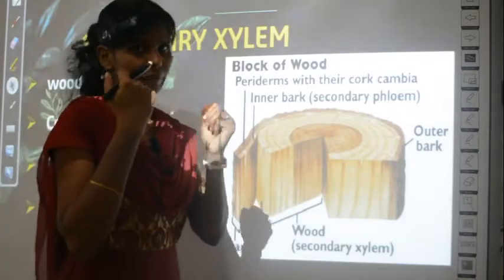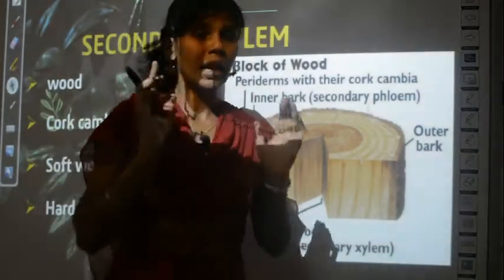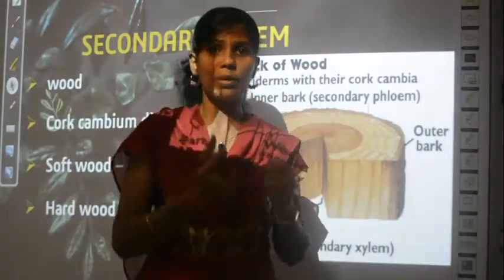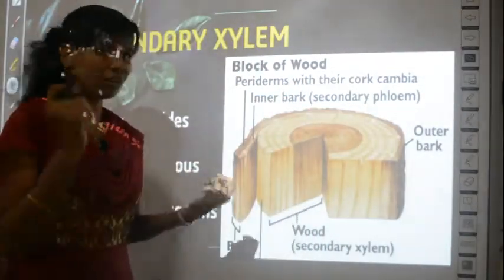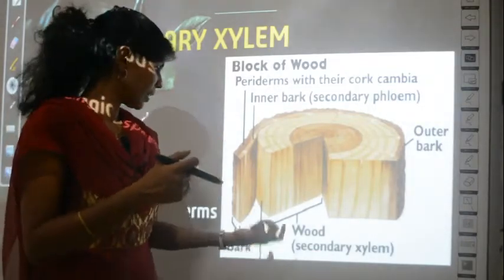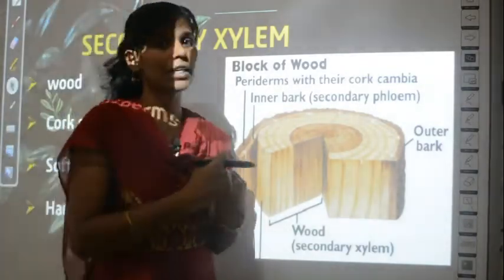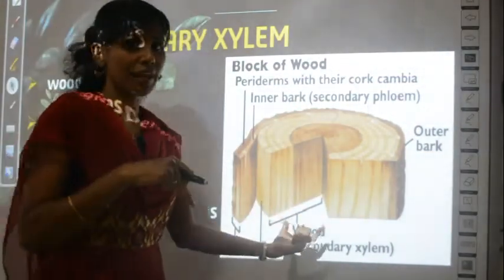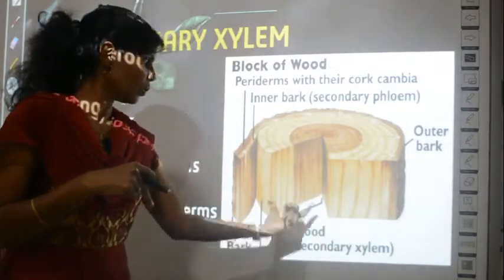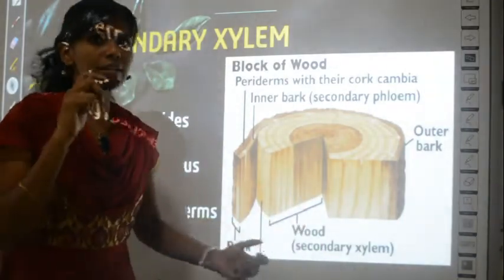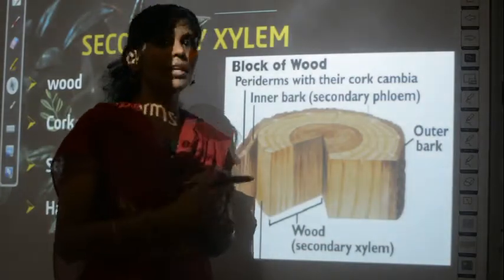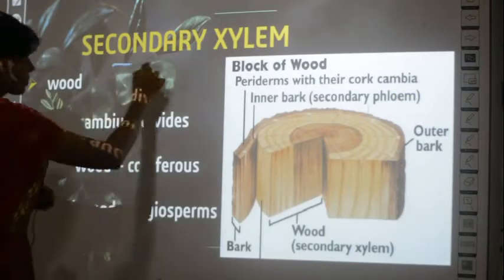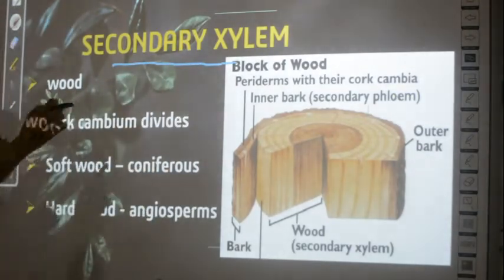Bark is not wood — it's the outer layer that can be removed easily. Inside the bark there is a thick structure that you cannot break without an axe or carpenter's tools — that inner structure is called wood. The wood is technically called secondary xylem. Secondary xylem is nothing but wood.